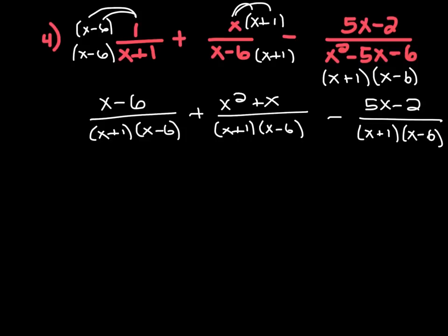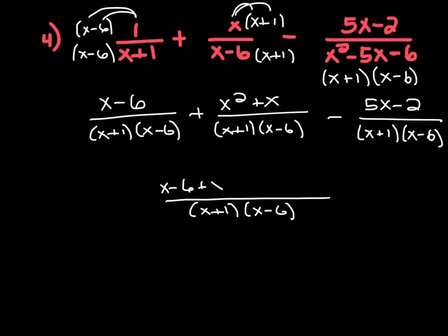So when we rewrite this as one fraction, we keep our common denominator of x plus 1 times x minus 6, and bring everything down. We have x minus 6, we have x squared plus x, and because we have the subtraction sign here, don't forget to distribute it to both terms. Don't bring down negative 5x minus 2 — it's negative 5x and then plus 2, right? Negative times a negative is a positive. So negative 5x plus 2.